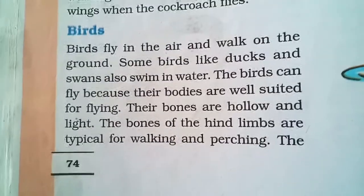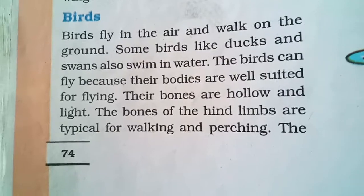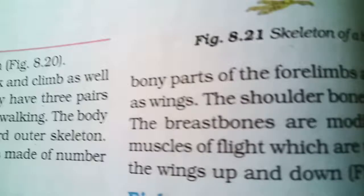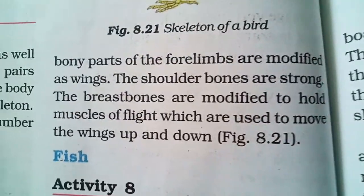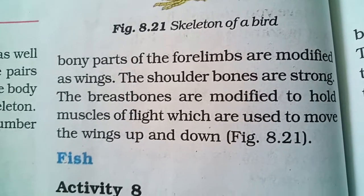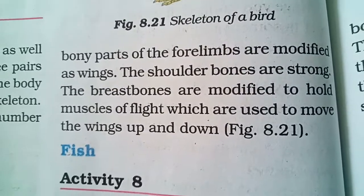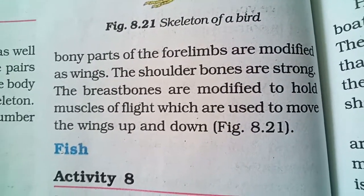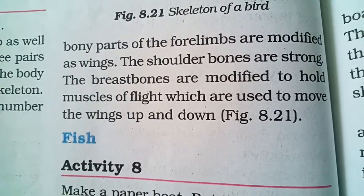The hind limbs are typical for walking. The bony parts of the forelimbs are modified as wings. The shoulder bones are strong. The breast bones are modified to hold the muscles of flight.